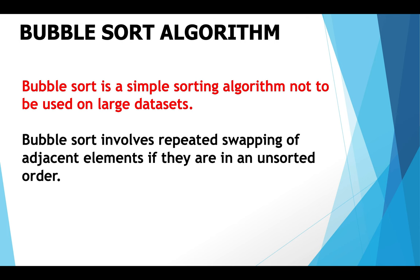Before we begin understanding the algorithm, there are a couple of statements that you should remember about bubble sort. Number one, bubble sort is a simple sorting algorithm that you should not use on large data sets because the average and worst case complexity are very high. And all that happens in bubble sort is the repeated swapping of adjacent elements if they are in an unsorted order. This is the main mantra of the bubble sort algorithm.